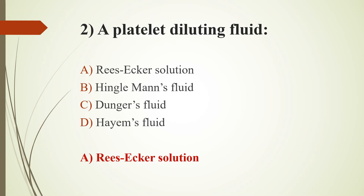Other options: Hinkleman's fluid and Dungus fluid are both used for absolute eosinophil count. Hems fluid is used for RBC count — it is a RBC diluting fluid. Another diluting fluid used for RBC counting is isotonic saline, then Gower's solution, which contains citrate and formalin. WBC diluting fluid is Turk's fluid.